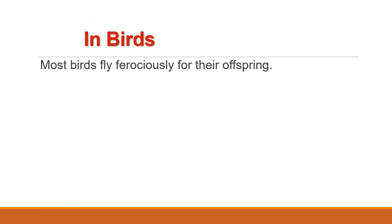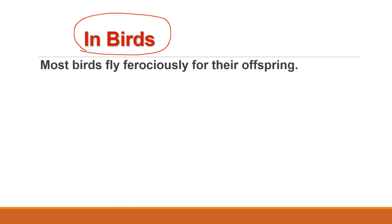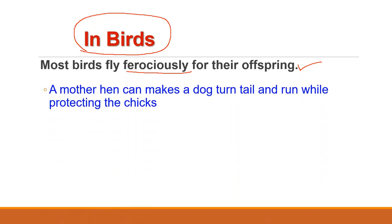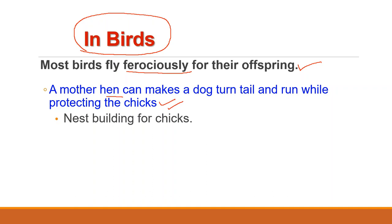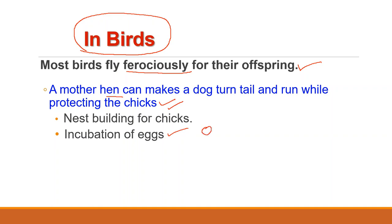Parental care is particularly seen in the case of birds and mammals. Protection of the young reaches a high degree of development in birds. Most birds will fight ferociously for their offspring. For example, a mother hen with baby chicks can make a dog turn tail and run. All birds have to incubate fertilized eggs to produce offspring. Incubation may be done by one or both the parents. The larger part of incubation in birds is rendered by the female, although in several instances both parents share this duty and occasionally only the male performs it. Nest building is a remarkable instinct in different groups of birds, and each species tends to use particular material and constructs nests in a particular way.